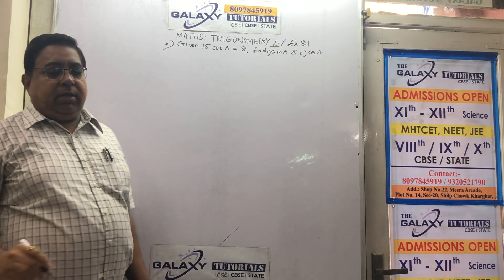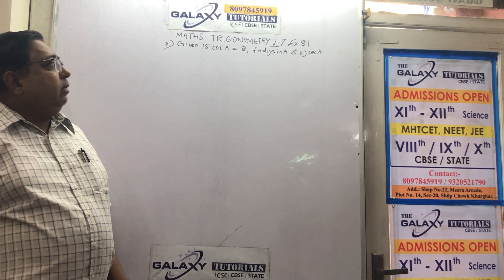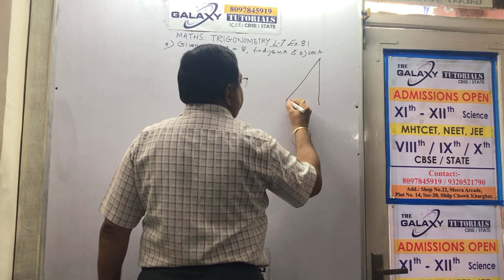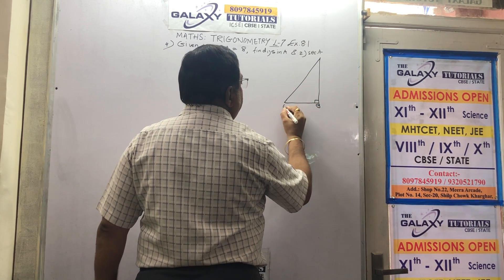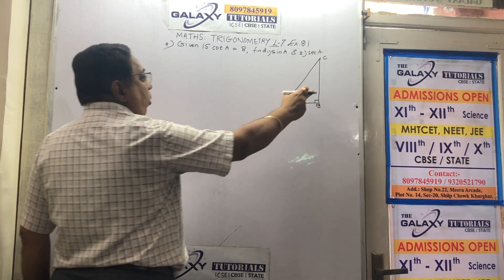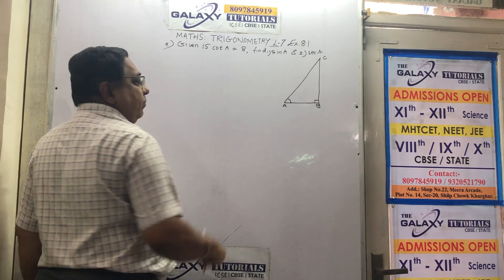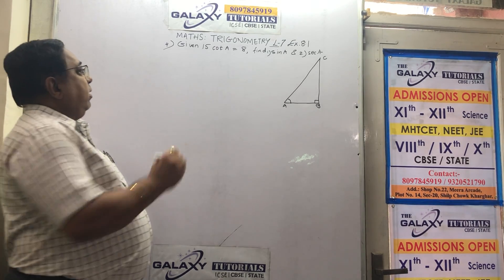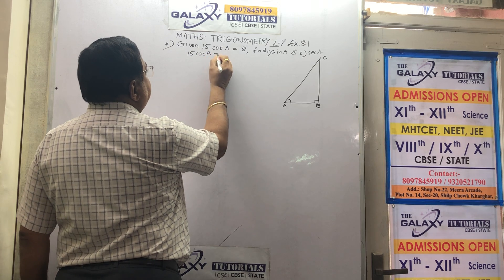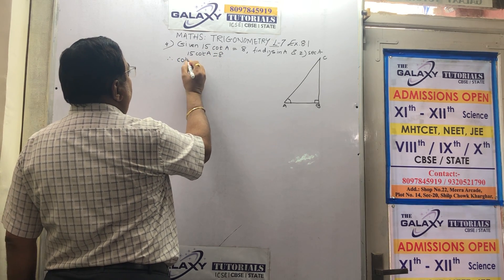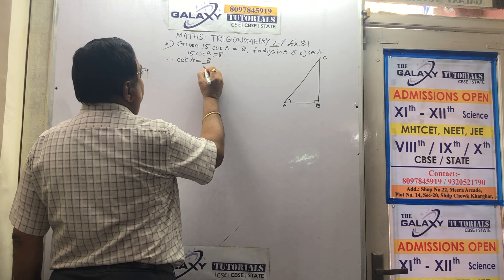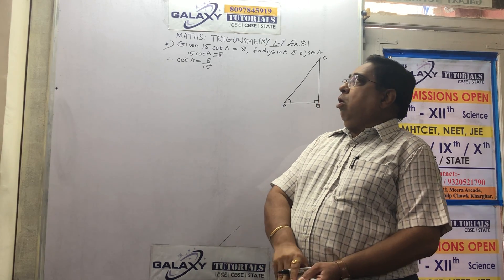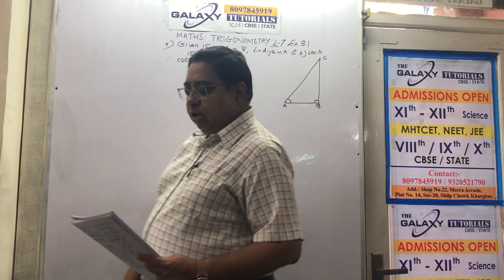We are given cot A and we are supposed to find sin A and sec A. Step number 1, as usual, we draw a right angle triangle with right angle at B, and vertices A and C. We are interested in angle A because sin A and sec A have to be found. Now, 15 cot A is 8, therefore cot A equals 8 upon 15. This is how you begin the step.